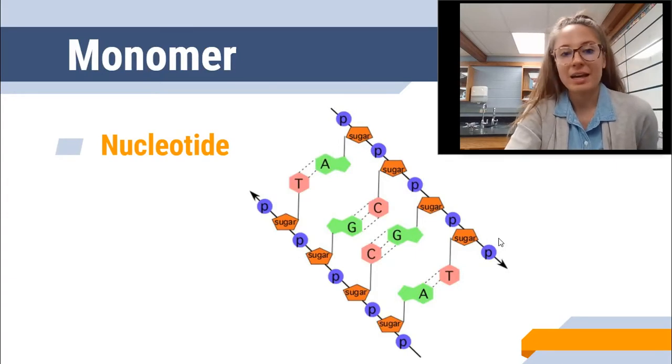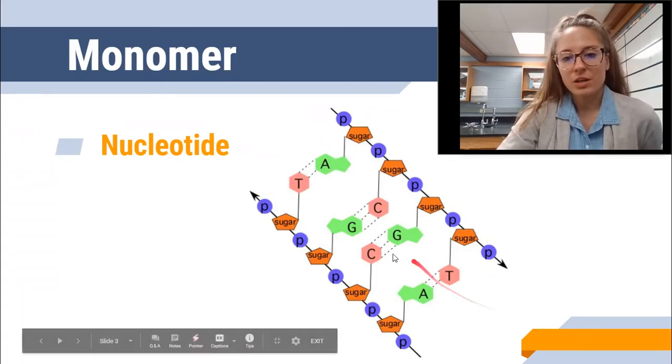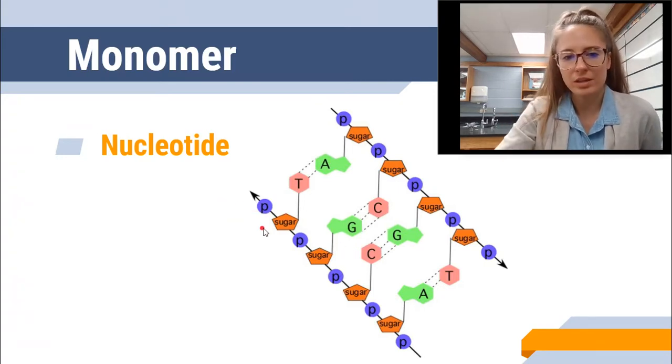The monomer for a nucleic acid is a nucleotide. So you can see here, this is an image of a nucleic acid, you can kind of see the repeating units.